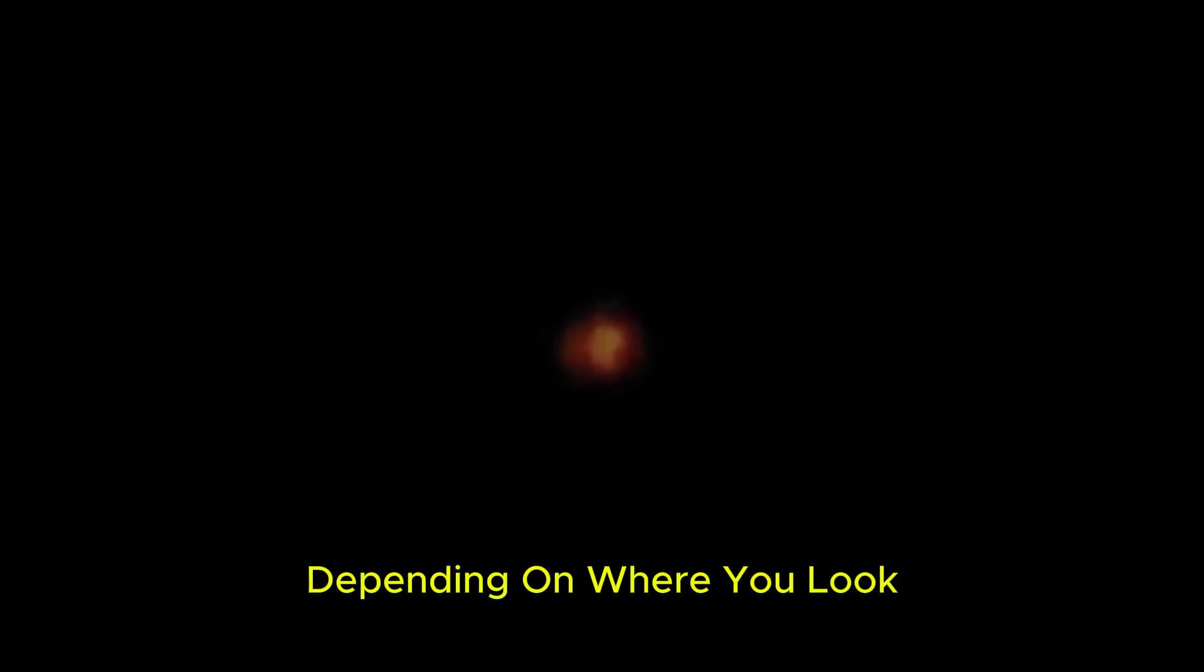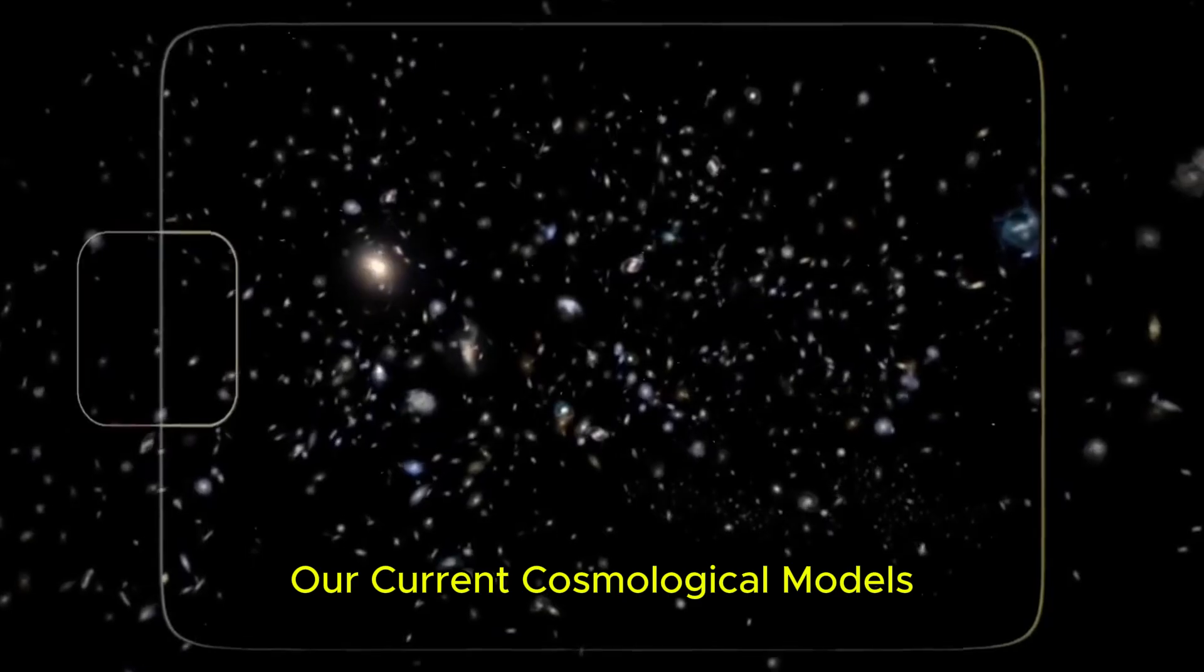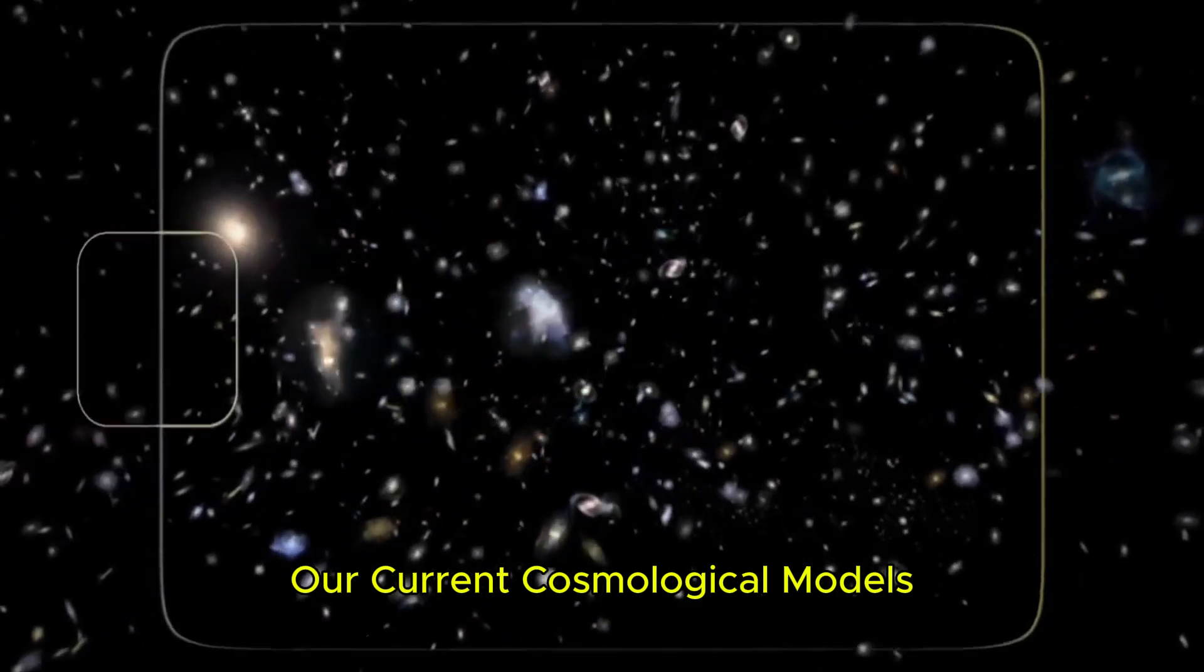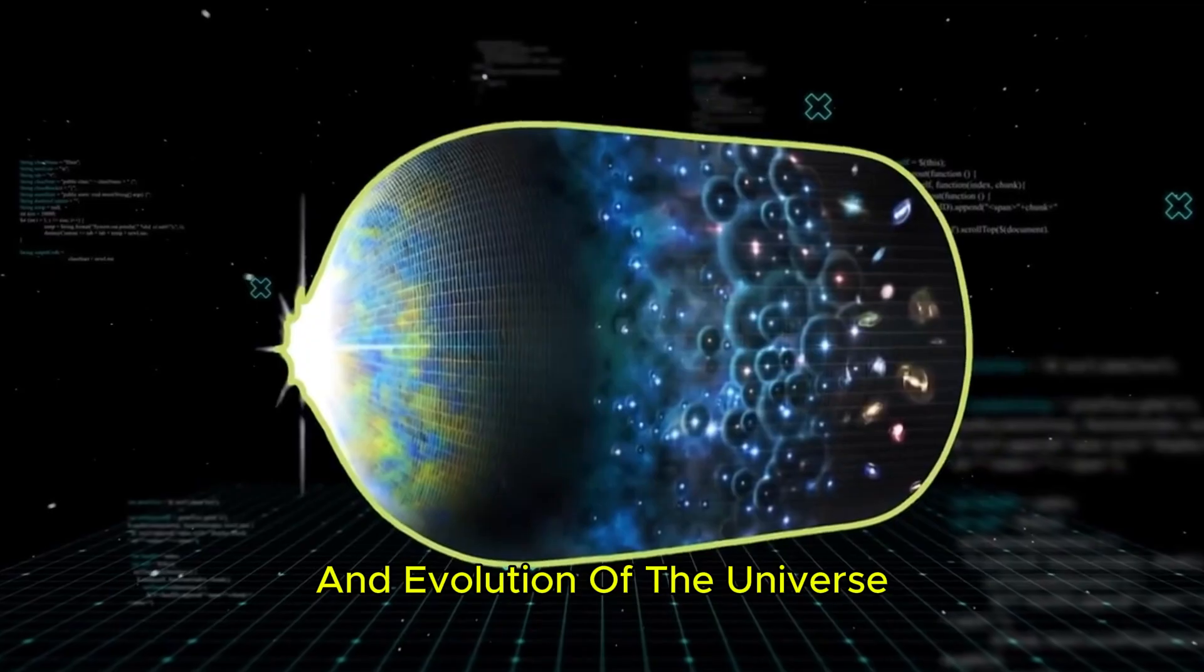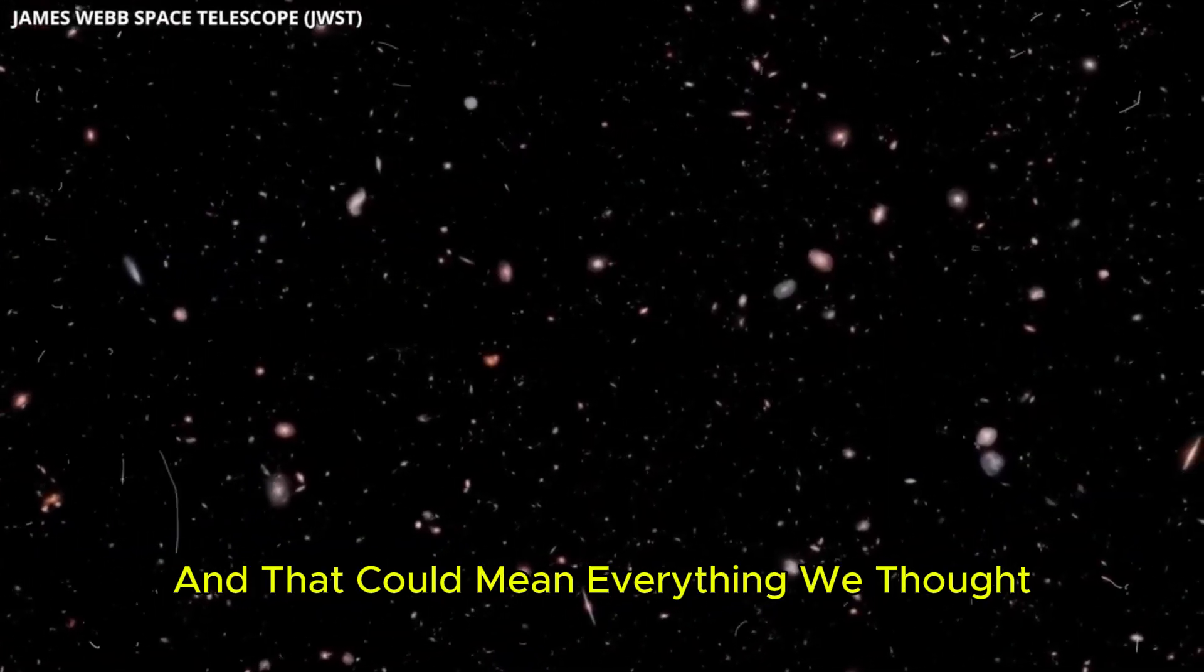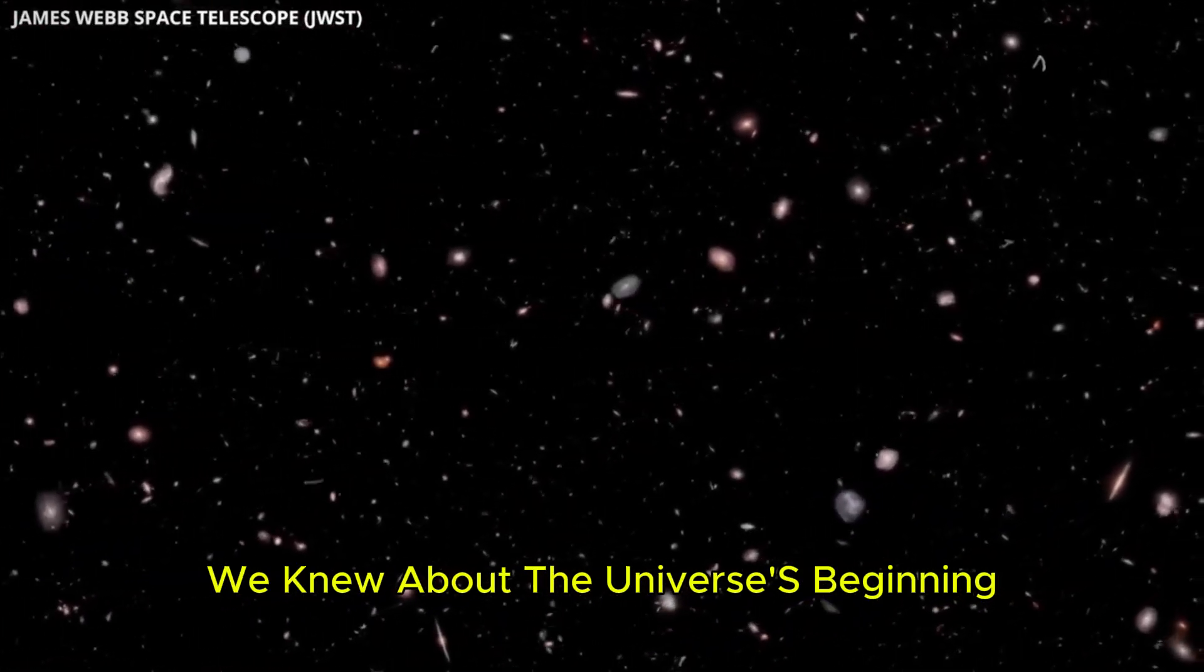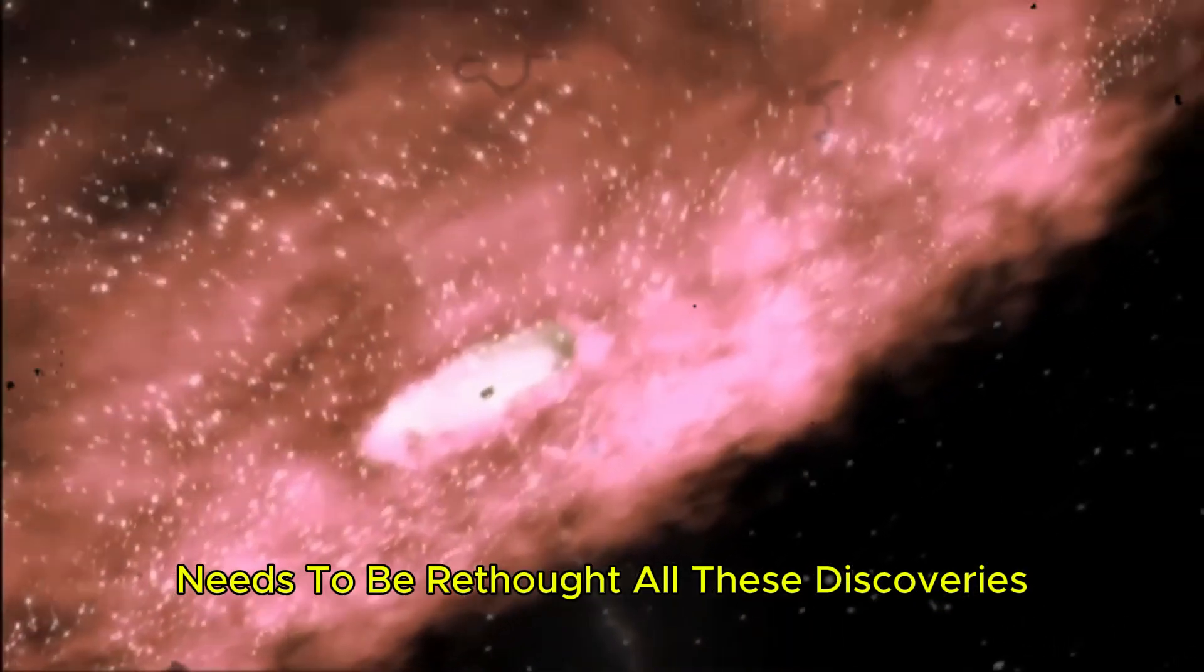What if the universe doesn't even have a single fixed age? What if the age of the universe actually varies depending on where you look? This completely challenges our current cosmological models. It suggests that the way we've been measuring the age and evolution of the universe might be fundamentally flawed. And that could mean everything we thought we knew about the universe's beginning needs to be rethought.